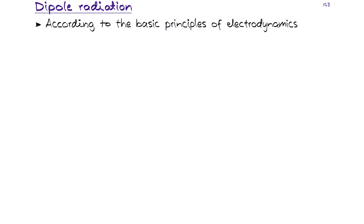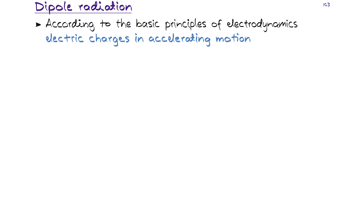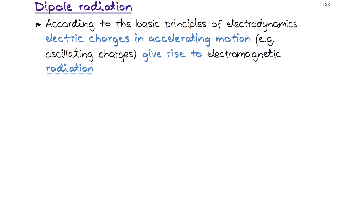Based on the basic principles of electrodynamics, what gives rise to light and electromagnetic radiation? Essentially, it's those source terms in Maxwell's equations. Since we are interested in propagating fields and not just electrostatic fields, it is actually the moving or accelerating electric charges that give rise to light. So essentially, it could be oscillating electric charges that give rise to electromagnetic radiation.